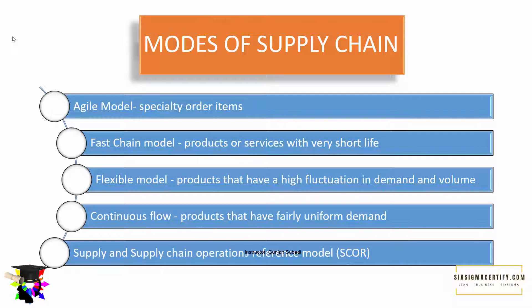Continuous flow models are for products that have fairly uniform demand. And the Supply Chain Operations Reference model, or SCOR model, helps in management of waste, creates standards, and improves continuously the supply chain model.